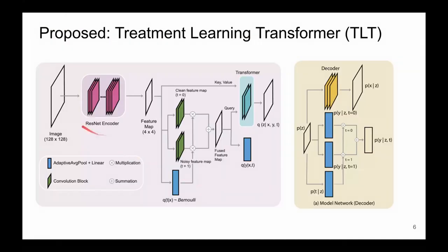Specifically, once we have an image, it goes through a residual network encoder. Once we have the feature map, we have two individual networks that do not share parameters. For each step, the gradient only passes through one of these networks — the convolution block — which computes the querying and then feeds into the transformer. For testing, we also have our posterior as the decoder, along with a binary individual convolution module for prediction.